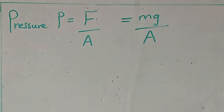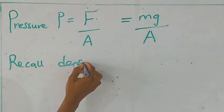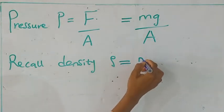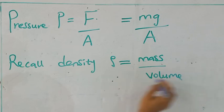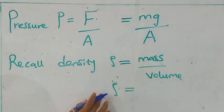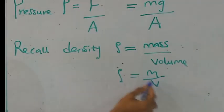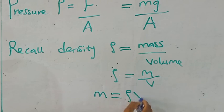Another thing I want you to recall is that density, in physics we represent density with rho. Density is mass over volume. That means density rho is equal to mass over volume. If we cross multiply this, v times rho, m times 1, we have it that mass is equal to rho v.